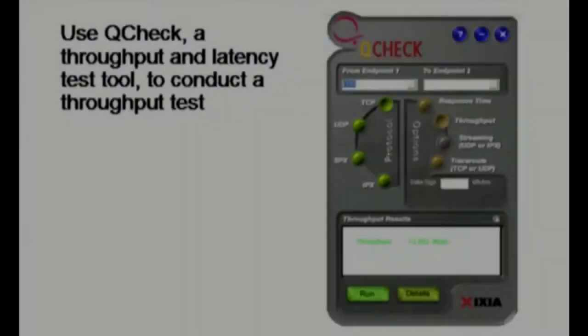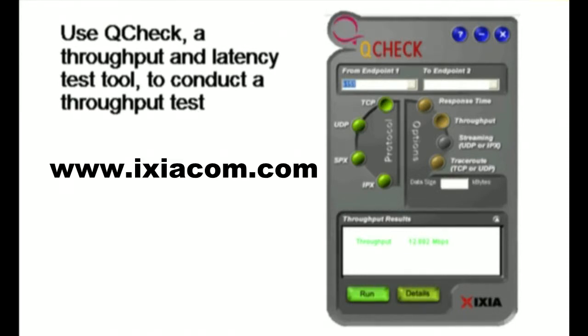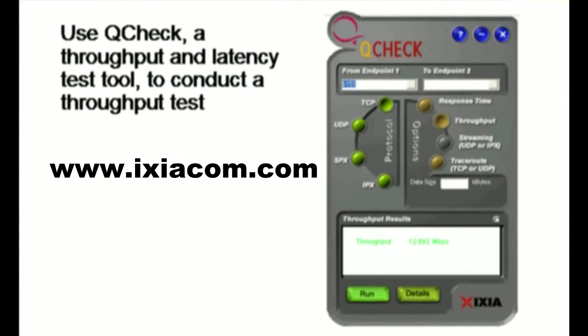We found there was a problem logging on, so we suspected it might have something to do with the domain controller. I loaded a QCheck agent on the server and workstation. QCheck is a freebie from IXIA Communications. You can download it, put it on your server and workstation, and do a throughput or latency test to find out how it's performing at layer four.